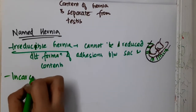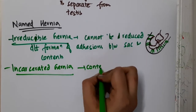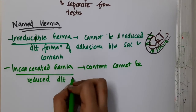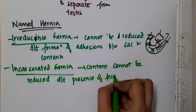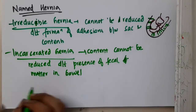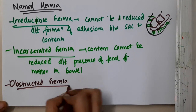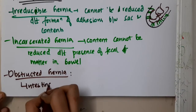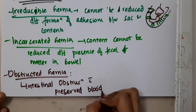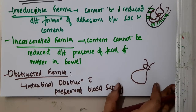Next is incarcerated hernia. Here the contents cannot be reduced, but this is due to the presence of fecal matter in the bowel — the bowel cannot be reduced because of the fecal matter. Then we have obstructed hernia: intestinal obstruction is present, but blood supply is preserved. That is obstructed hernia.